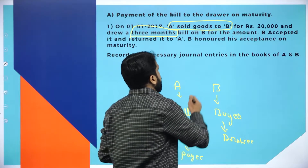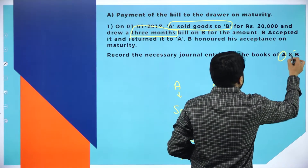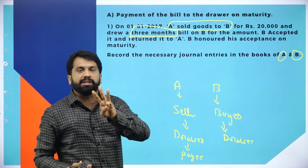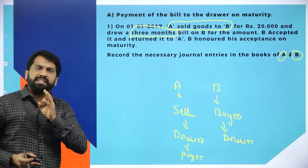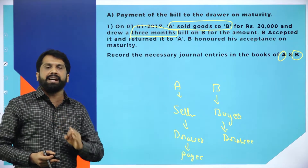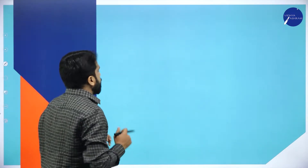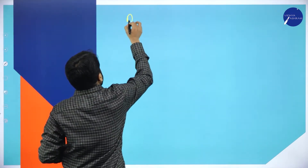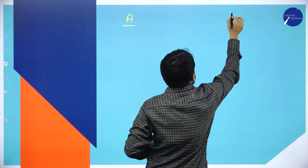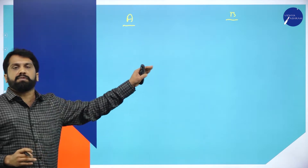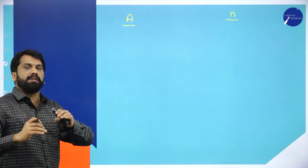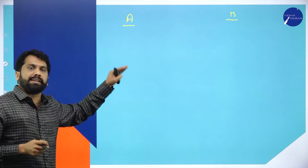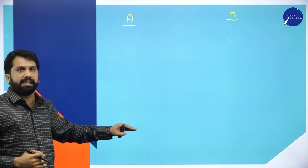Record the necessary journal entries in the books of A and in the books of B. You have to do 3 journal entries in the books of A and 3 journal entries in the books of B. I will explain the easiest journal entries. I will not use any lengthy procedure or concept here — just in a shortcut, I will write down the journal entries for better understanding.